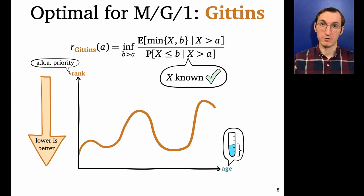And so for each job size distribution, Gittins constructs this rank function, and then it uses each job's age, plugs them into the rank function to get the priorities. And that's how Gittins works.